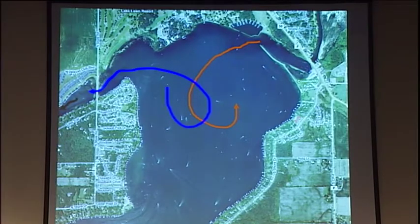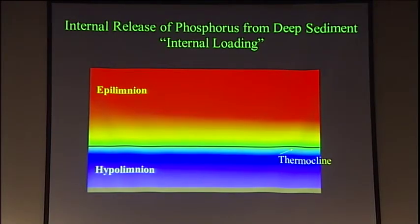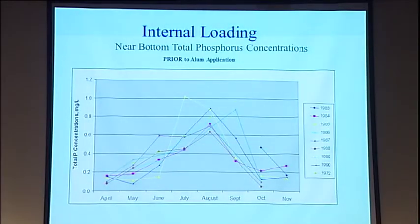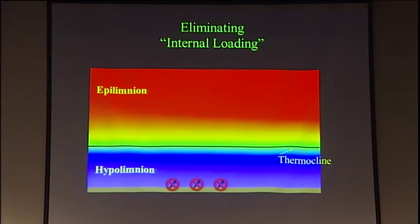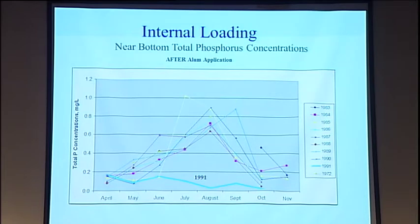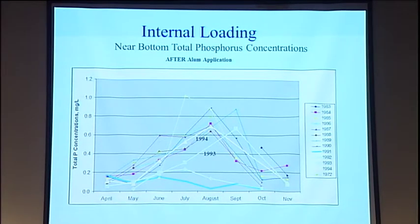How about the alum treatment? We buried the sediments, but then we had that big flood with a lot of nutrients and sediment coming into the system. Looking at phosphorus concentration near the bottom of the lake before the alum treatment — you can see it goes up all summer long, all those nutrients coming out of the bottom sediments accumulating in the bottom water. That's what we didn't want to see. After the alum treatment in 1991, that's exactly what it did — the increase was gone. In 1992 it worked pretty good. But in 1993 and 1994, we lost it. So even though we put about $800,000 into the alum treatment, because of all that external loading and the nutrients continuing to come in, the internal loading was happening again.